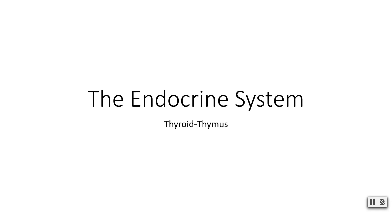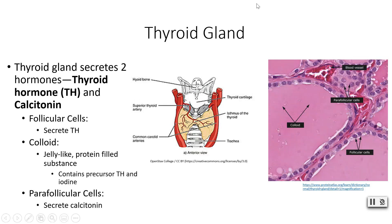In this lecture we will cover the remainder of the endocrine system, from the thyroid through the thymus. The thyroid gland secretes thyroid hormone and calcitonin. It sits in the anterior portion of the neck and is composed of follicular cells, parafollicular cells, and colloid.